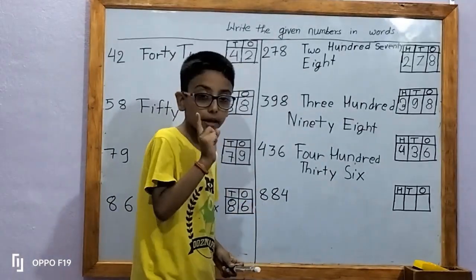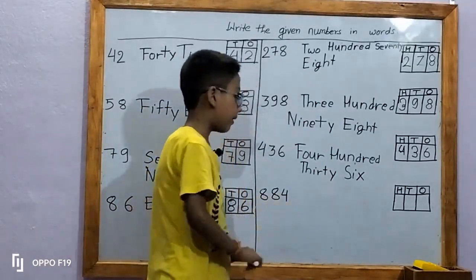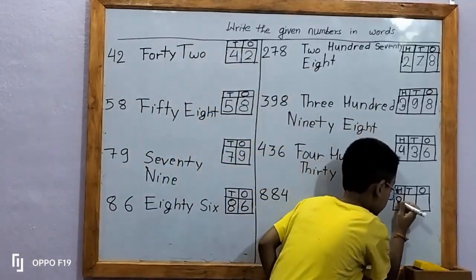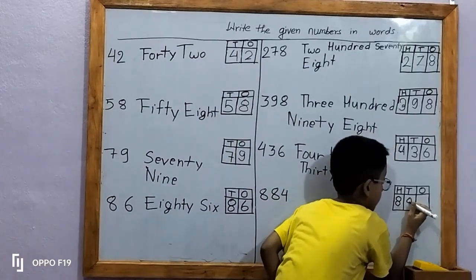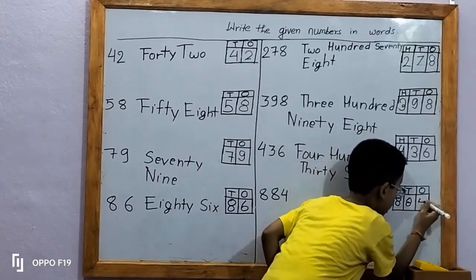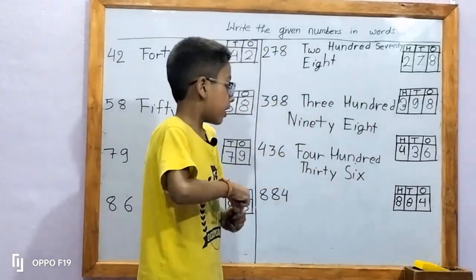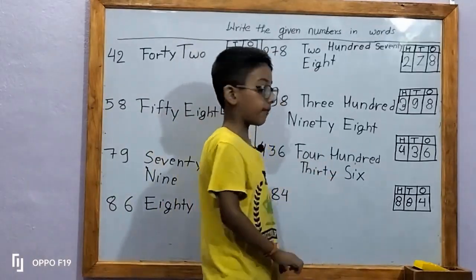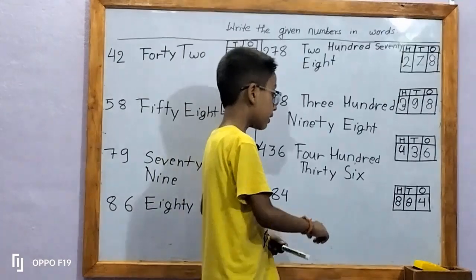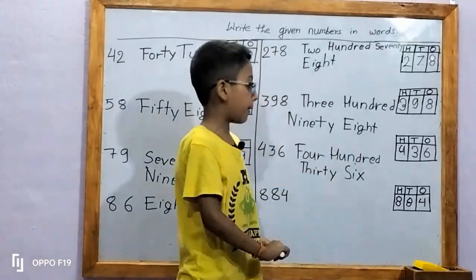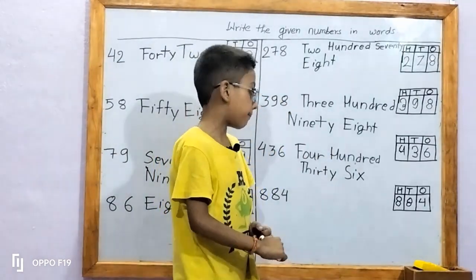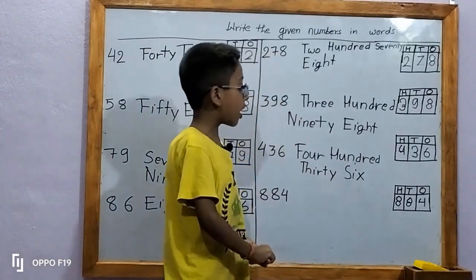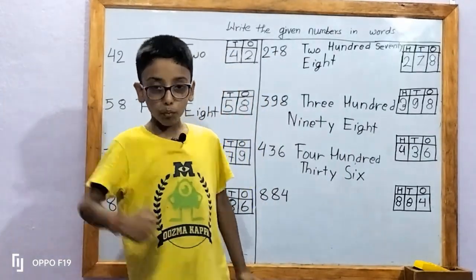In the last number, there was given 884. Let's write in place: 884. Four is in one's place; four ones means 4. Eight is in ten's place; eight tens means 80. Eight is in hundred's place; eight hundreds means 800. It makes the number 884. Let's write in words.